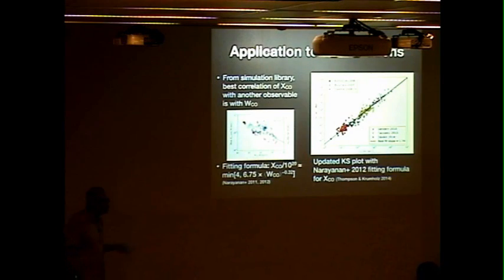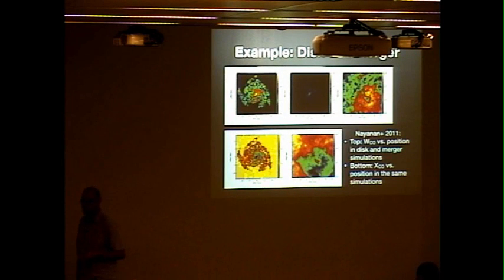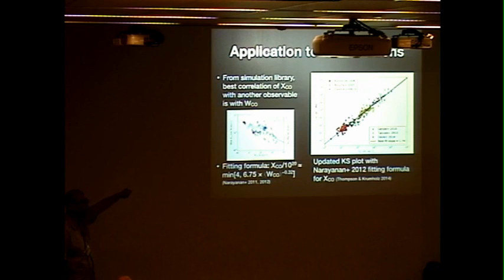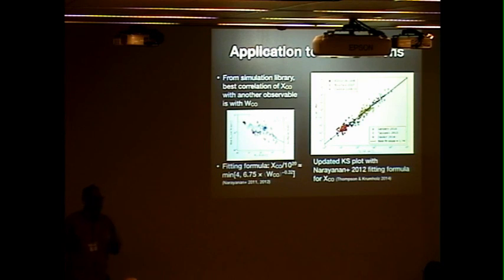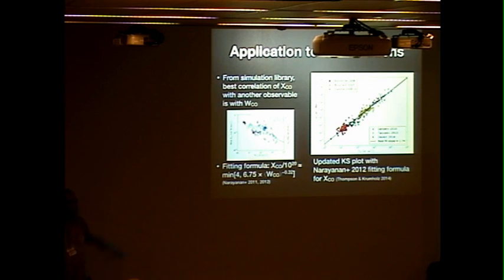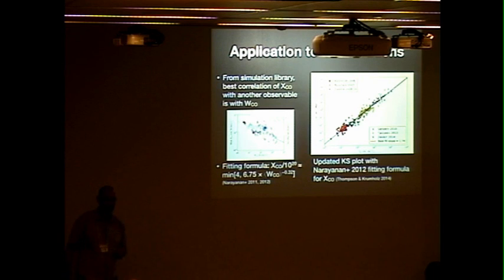You need to have this in terms of observables if it's going to be useful. It turns out the thing X_CO correlates with best is just the total intensity of CO emission. There's a lot of scatter, but things with lower CO intensities have systematically higher X_COs. You can make a best fit — there'll be scatter on a galaxy-by-galaxy basis. But if you take the data and instead of using the bimodal X_CO where I say 'this is a merger, give it this X_CO, this is not, give it this X_CO,' you just use this formula — lo and behold, there's no bimodality. Gas surface density, molecular gas surface density, star formation rate surface density: all fits on one nice plot. No more bimodality. It's an artifact.